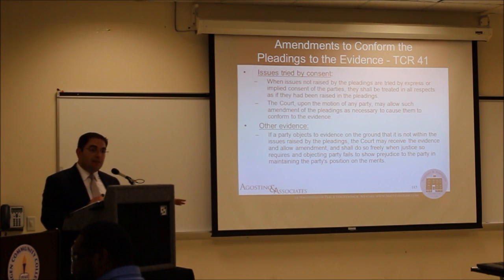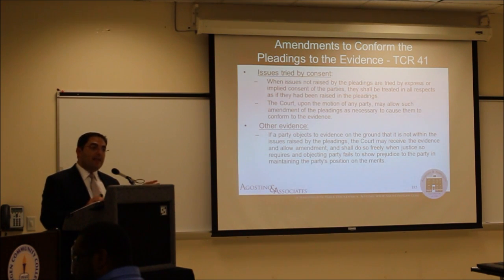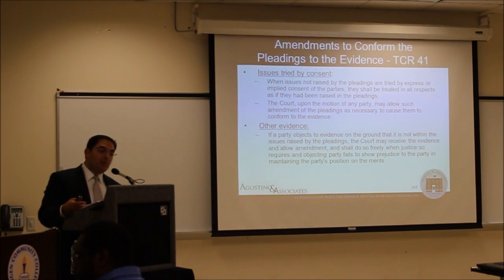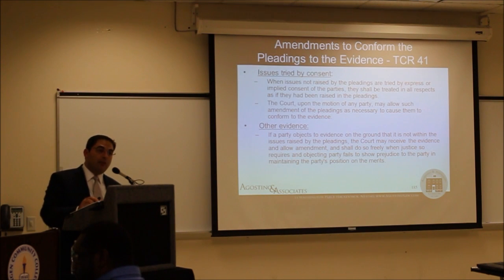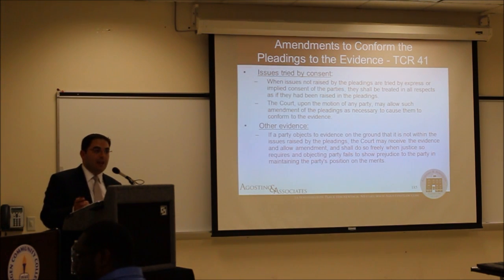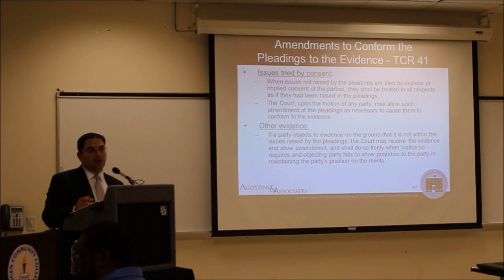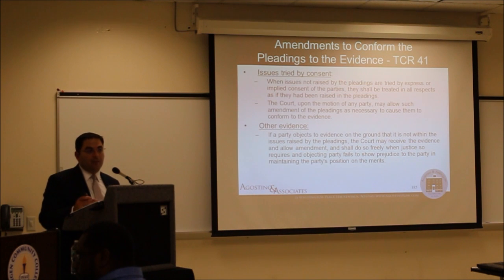If you're dealing with opposing counsel who is asleep at the wheel, you can get things in through evidence — have the witness testify and then make a motion after the testimony is already in evidence to conform the pleadings to the evidence. This typically arises in the case of issues tried by consent. For example, the IRS determines the taxpayer had $5,000 in unreported interest income, and there's no allegation in the pleading saying that was in error — normally under Rule 34 that issue would be deemed conceded.